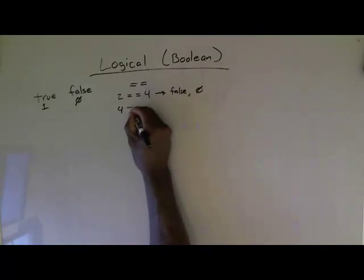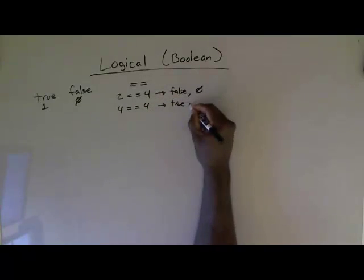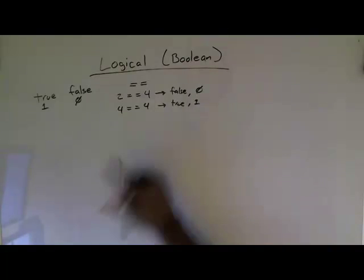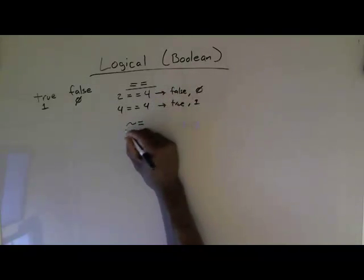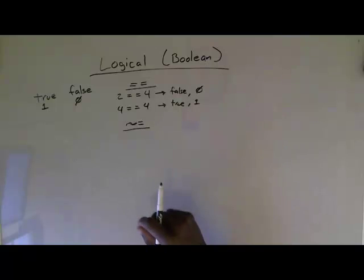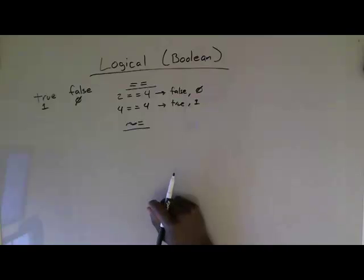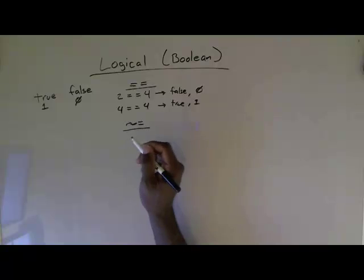I could say is four equal to four — that will evaluate to true or one. There's also the not-equal-to operator. The symbol is the tilde, which is this little squiggly sign located on the key to the left of the one key on your computer. So you do the tilde then the equal sign — that's the not-equal-to operator.